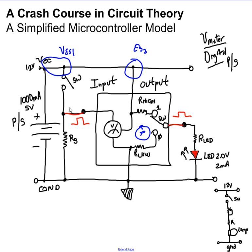We said that we can connect an input device to the microcontroller, and the job of the microcontroller is to read this value with its internal voltmeter. This voltmeter can read digital signals — if a voltage is above a certain level it reads it as a one, and if it's between another level it reads it as a zero.